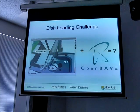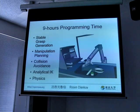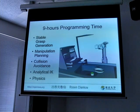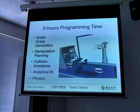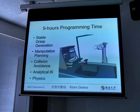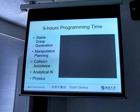We first did a case study about whether this is possible with OpenRAVE and how long it would take. The result, which we talked about in the paper, was that in nine hours we were able to go from just a robot model and CAD models to an autonomous demo where you can put any dish, any cup, any object in here and it will place them safely. So obviously this does collision avoidance, stable grasp generation, and manipulation planning. It uses analytical inverse kinematics, and finally there's some physics as well.